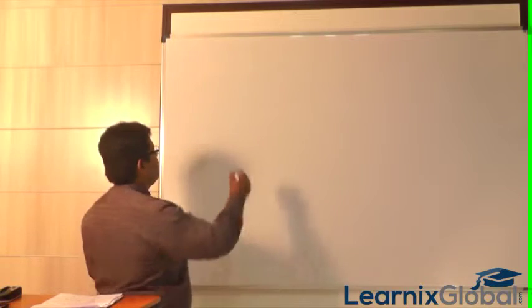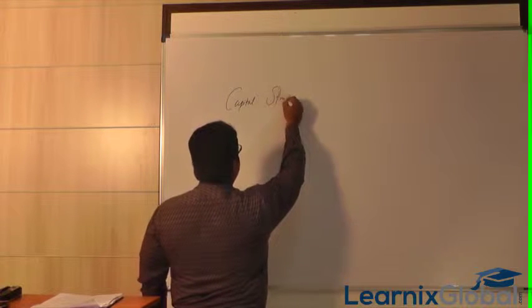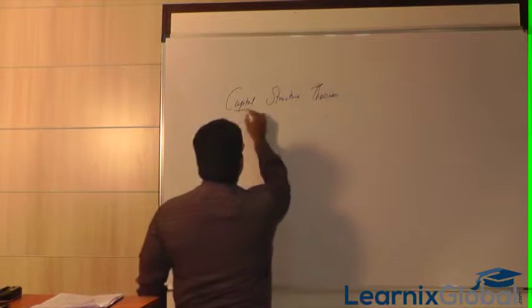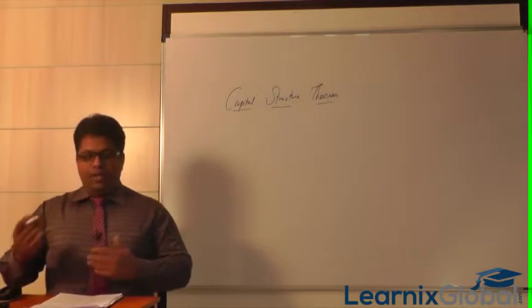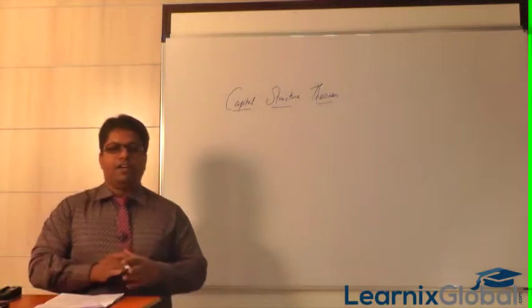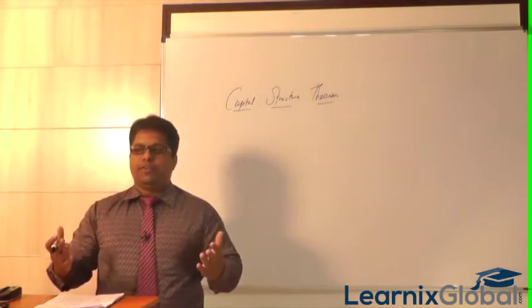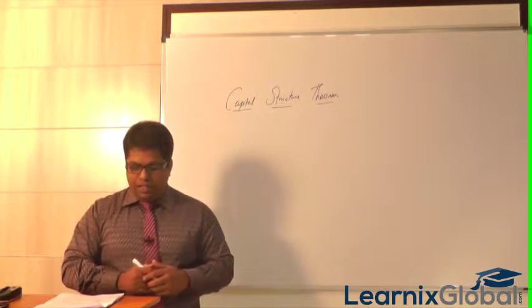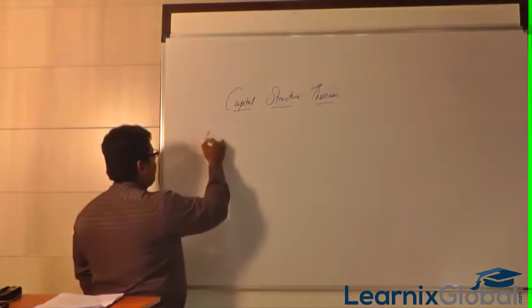Now we are going to discuss Capital Structure Theories. We have different theories, and all these theories will be focusing on the value of the firm — the capital that the firm has. We will take the Net Income Approach Theory first and discuss it, then go on to further theories.